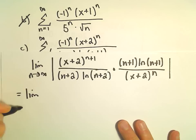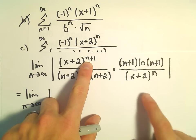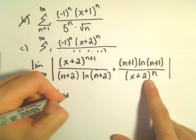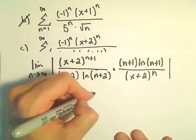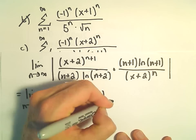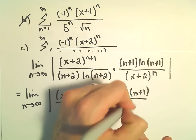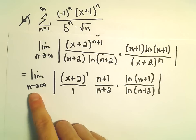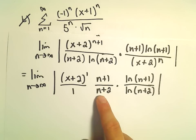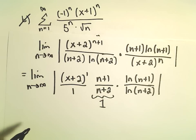So we have the limit as n goes to infinity. The x plus 2 raised to the n plus 1 over x plus 2 to the n leaves us with x plus 2 to the first power in the numerator. Then we've got n plus 1 over n plus 2, and the natural logarithm of n plus 1 over the natural logarithm of n plus 2. As n goes to infinity, n plus 1 over n plus 2 — since the degree of the numerator equals the degree of the denominator — this limit simply goes to positive 1.